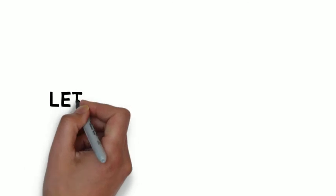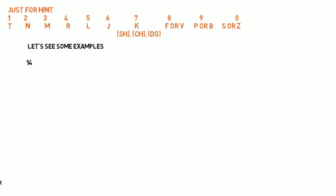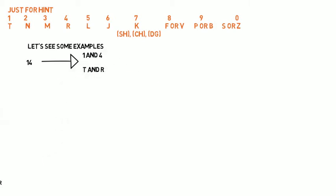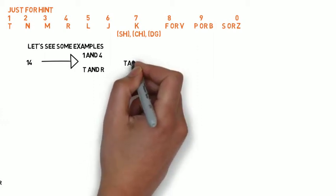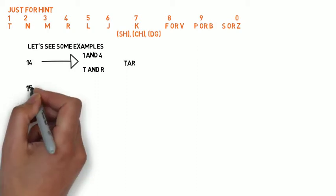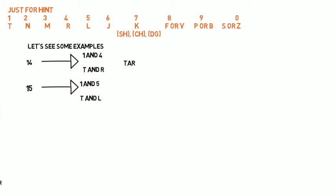Let's see some examples. For 14: 1 stands for T and 4 stands for R. Inserting the vowel A, we find 'tar' — isn't that interesting? For 15: 1 is T and 5 is L, giving T-L. We can say 'tall'. Note that the double-L is translated by 5, not 55, so we do not spell it as two separate 5s.